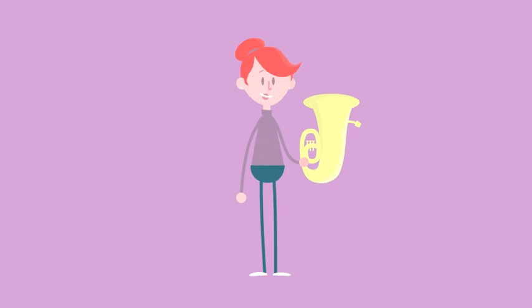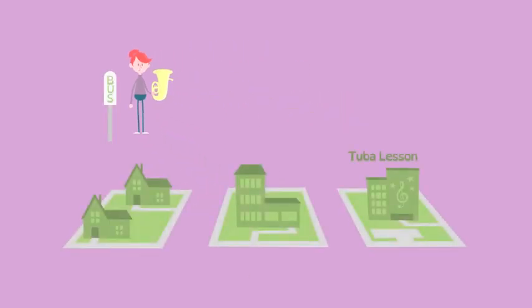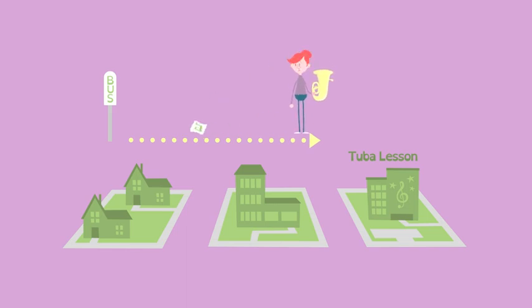Here's Lucy. She needs to walk to her tuba lesson, three blocks from the bus stop. After walking two blocks, she realizes she dropped her sheet music. She goes back one block, finds it, then continues to her lesson.